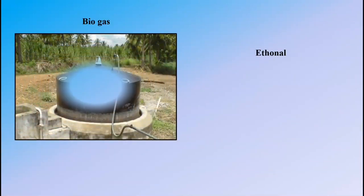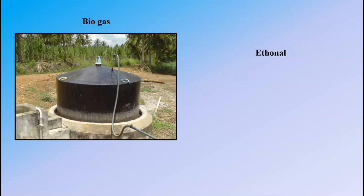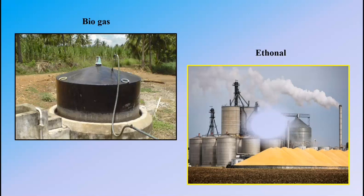Biogas is produced from cow dung, and ethanol is made by using sugarcane and maize.